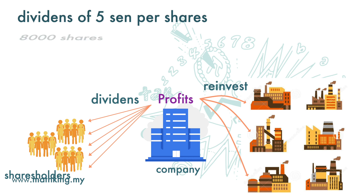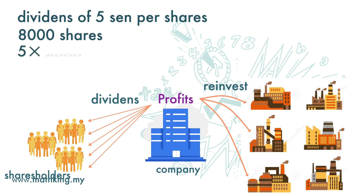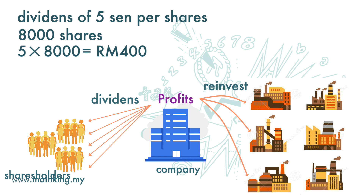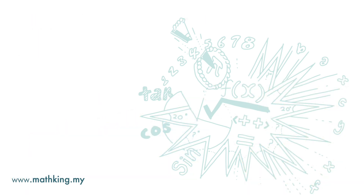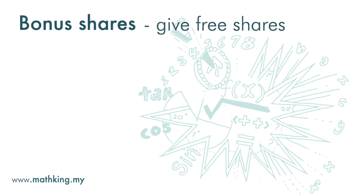So if Company A declares dividends of 5 cents per share, and if you own 8,000 shares in the company, you will receive 5 cents times 8,000 shares, which equals 400 ringgit.